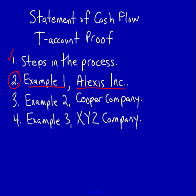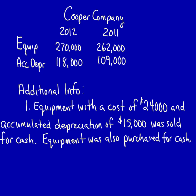Hi, we've just completed the video that covered Lexus. We're going to move on to example two, Cooper Company. Cooper Company again has a current year and a prior year.